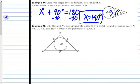Last example. Example 5. AB, BC, and AC are tangents to circle O at points F, E, and D, respectively. AF is 6, CD is 5, and BE is 4. What is the perimeter of triangle ABC?